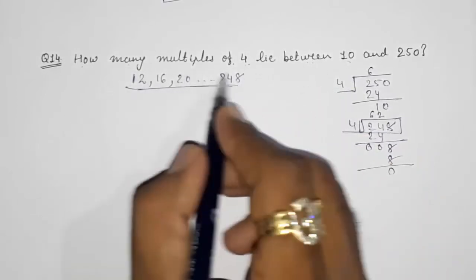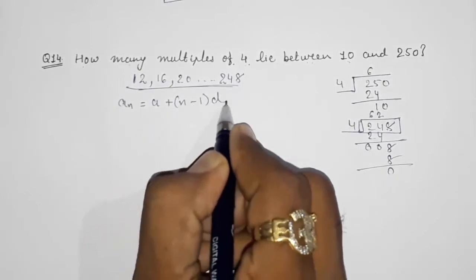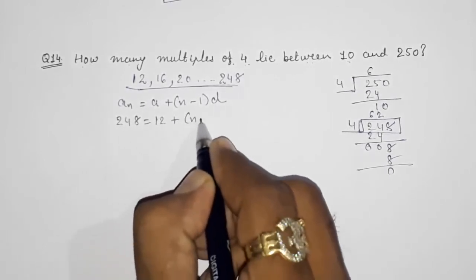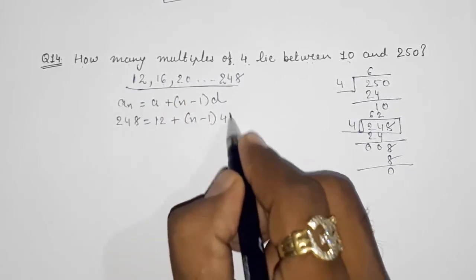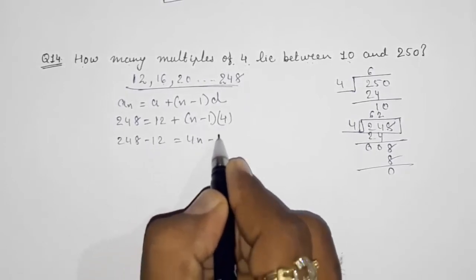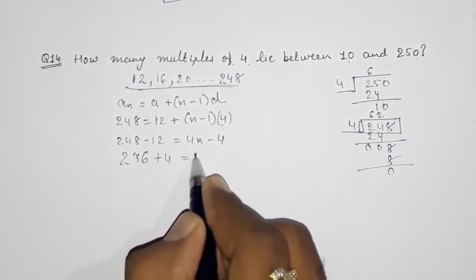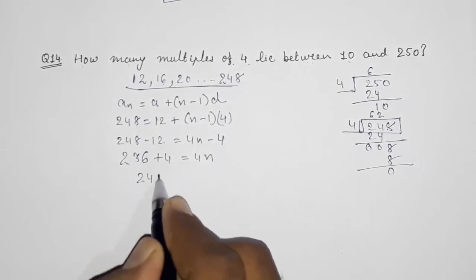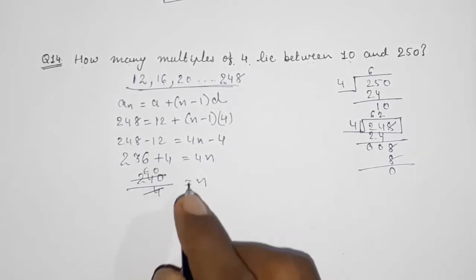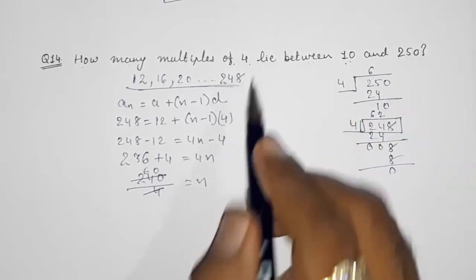Now this will be our AP and we have to find out how many terms are there. So we have to find out n. Again the same formula. An is equal to A, that is 12, plus N we want to find out, and our difference is plus 4. Now 248 minus 12 is equal to 4n minus 4. So 236. This minus 4 will come here as plus 4, and 240 by 4 is equal to n. So 60. Total 60 numbers are there between 10 and 250 which are divisible by 4.